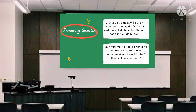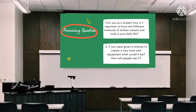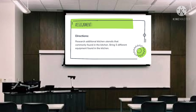Proceed to the next question. Number 2: if you were given a chance to create new tools and equipment, what would it be? How will people use it? Para mas mapadali ang pagbabalat ng vegetable at saka ng mga prutas. Bago tayo matapos, meron akong assignment para sa inyo. Research additional kitchen utensils commonly found in the kitchen. Bring 5 different equipment found in the kitchen — magdala na lang kayo ng 5 equipment na makikita sa kitchen para bukas.